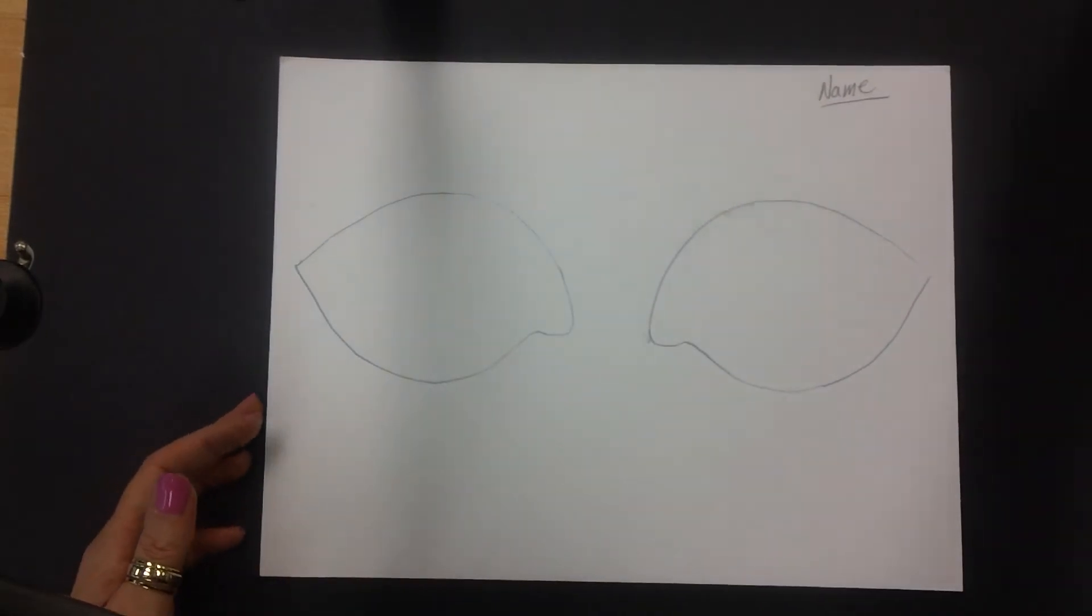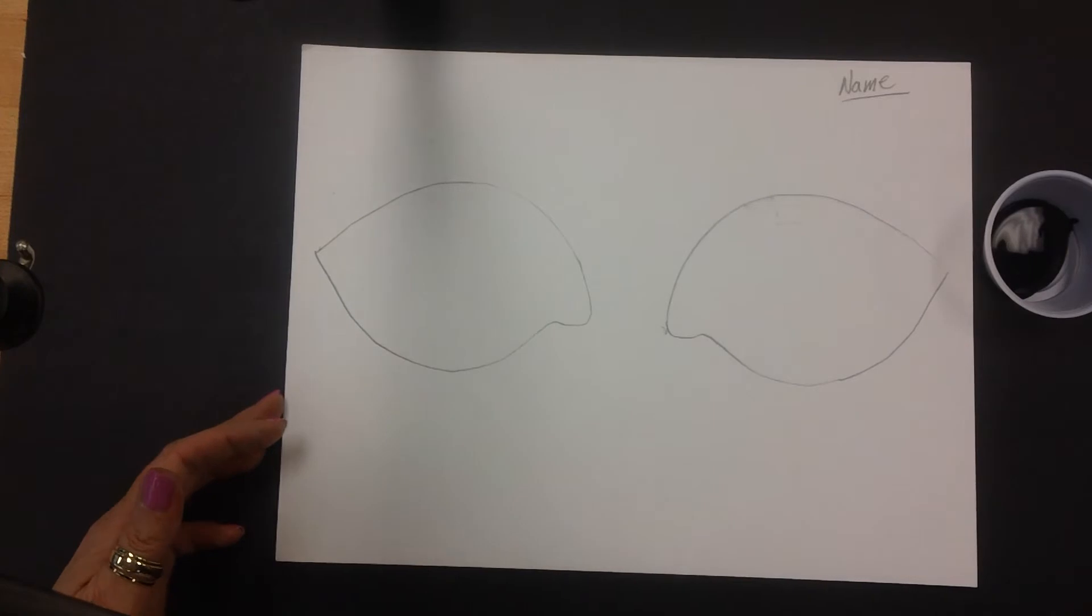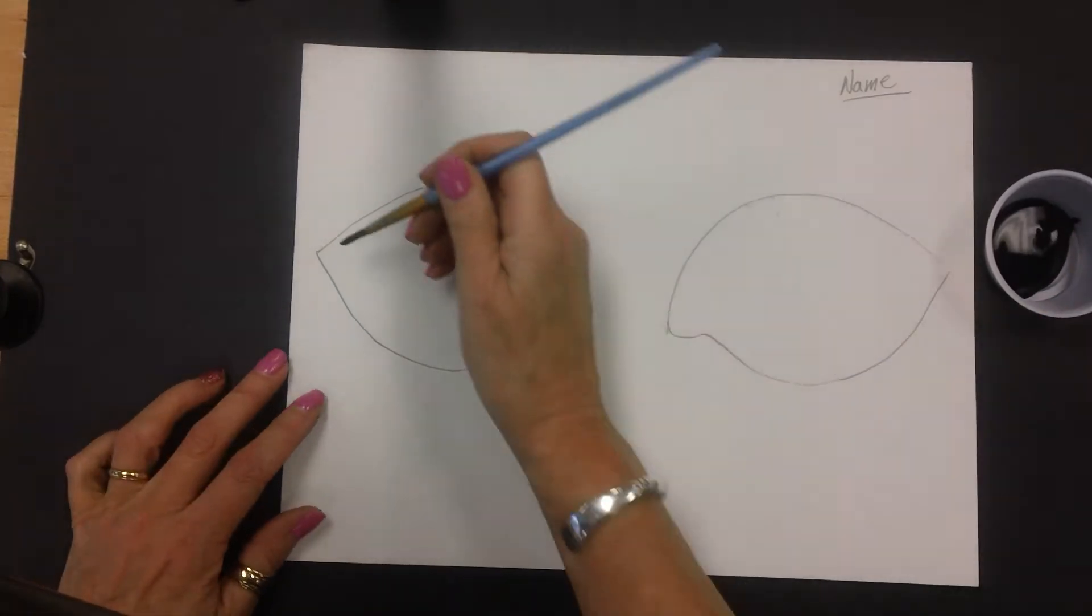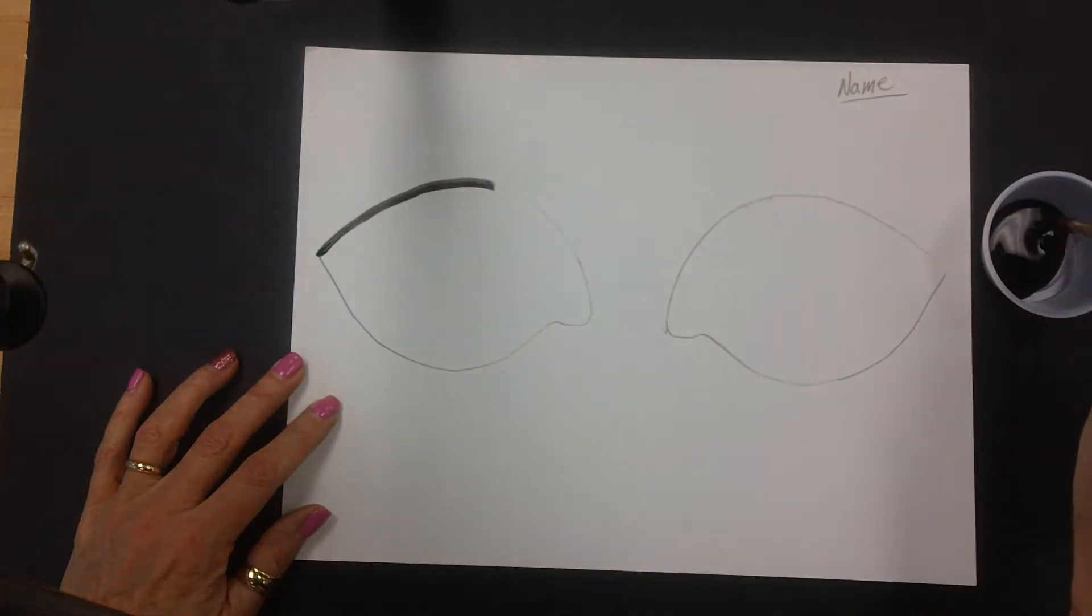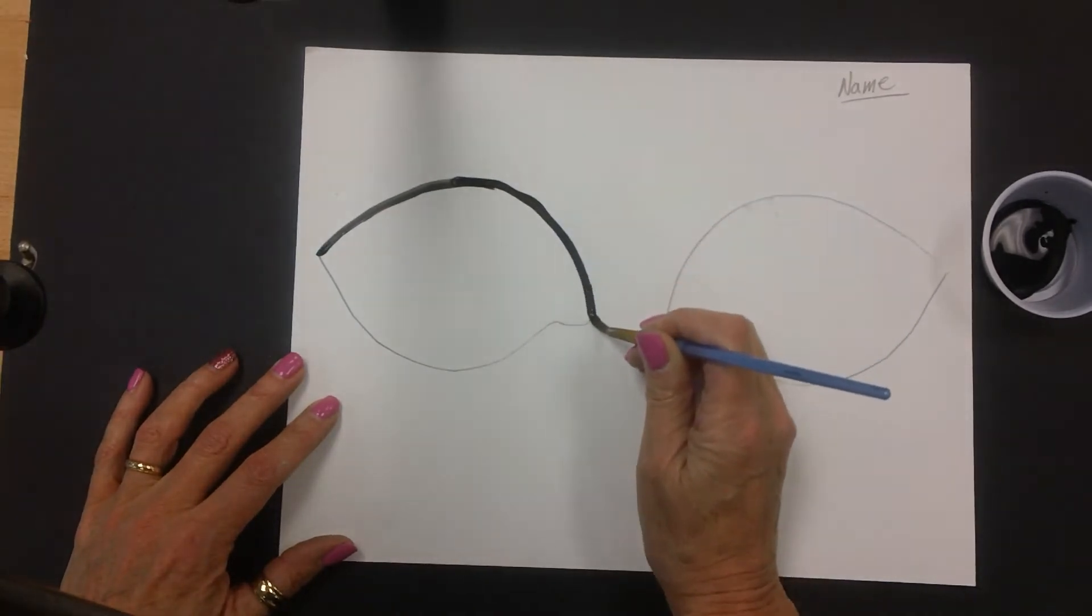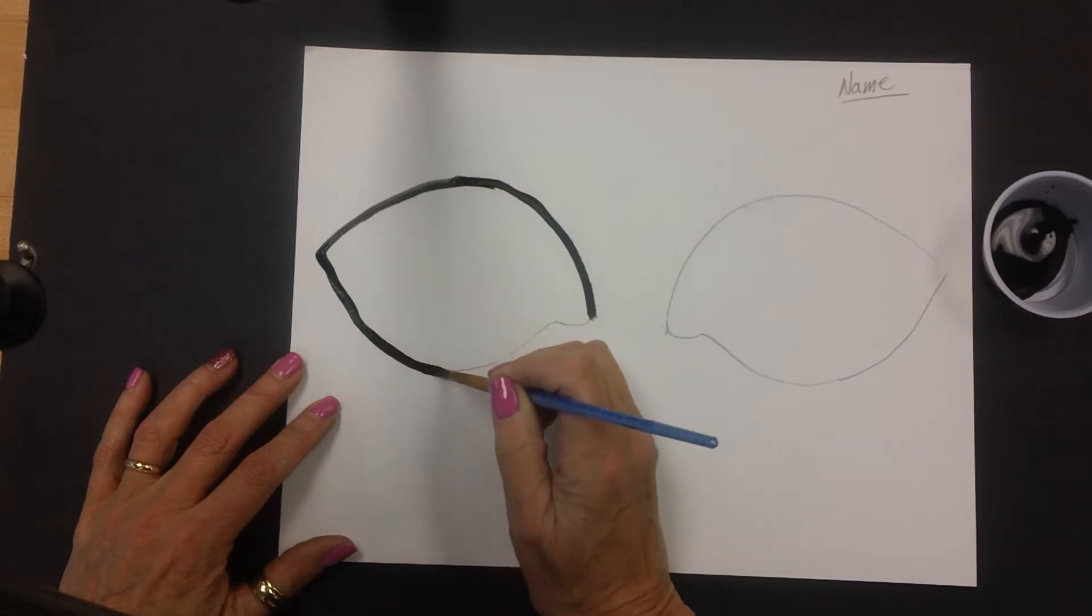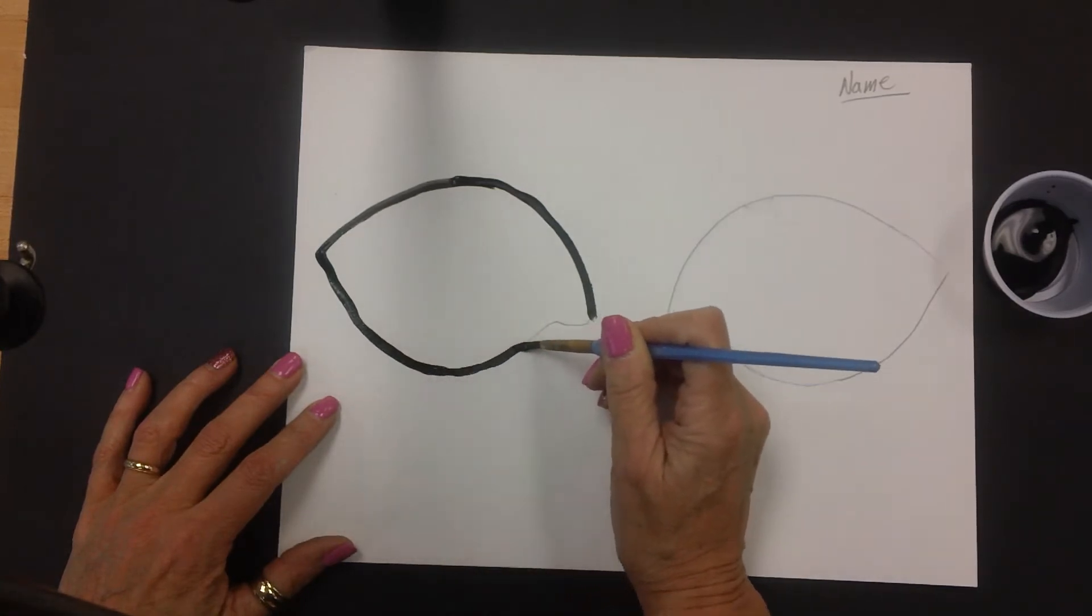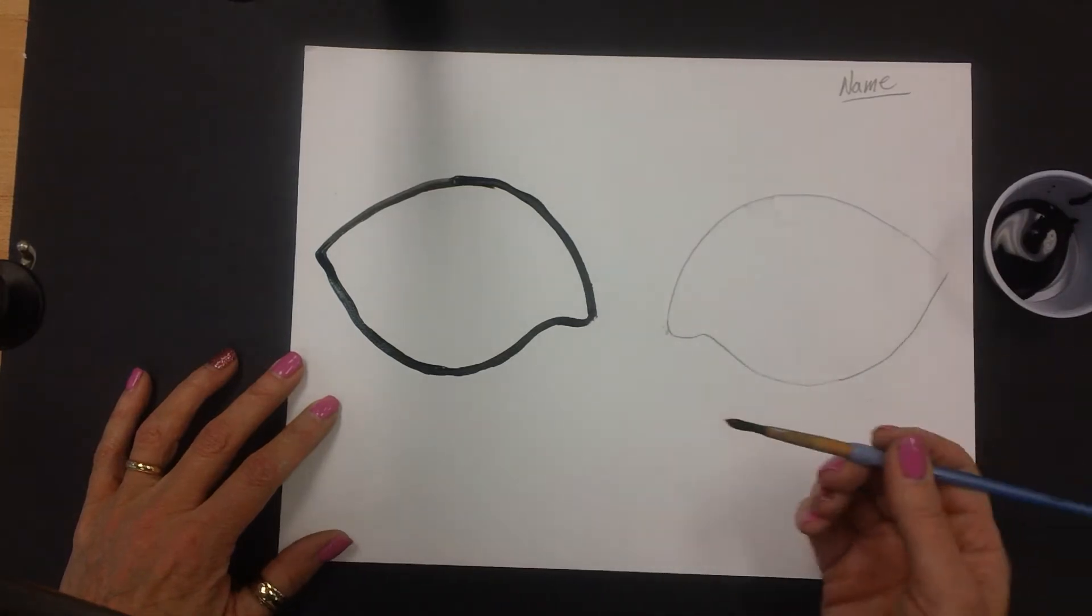And now we're going to go on to the paint. You're going to have a little cup of black paint and, of course, your paintbrush. And all you have to do for this is carefully paint right around that eye shape. This is pretty easy. I'm just going to do one of mine for this demonstration.